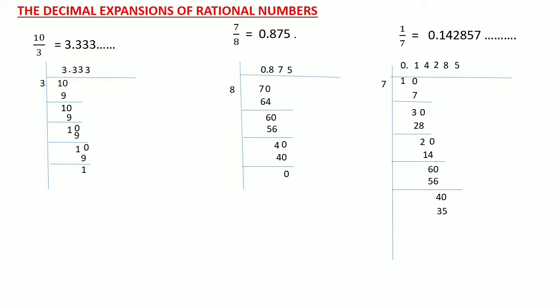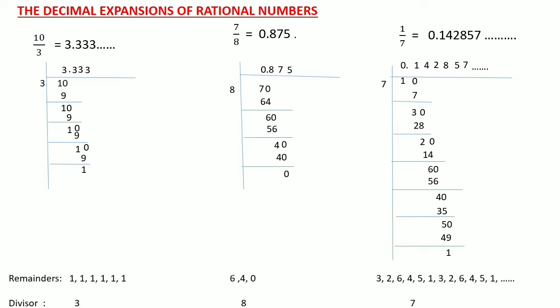Add a 0; 7 times 5 is 35; the remainder on subtraction is 5. Add a 0; 7 times 7 is 49; the remainder on subtraction is 1. After a certain stage the remainders keep repeating — the division does not end. Hence the decimal expansion of 1 upon 7 is 0.142857, and the digits repeat. We observe the remainder at each stage.